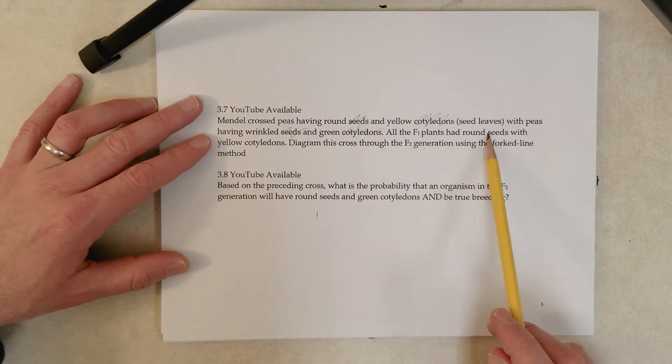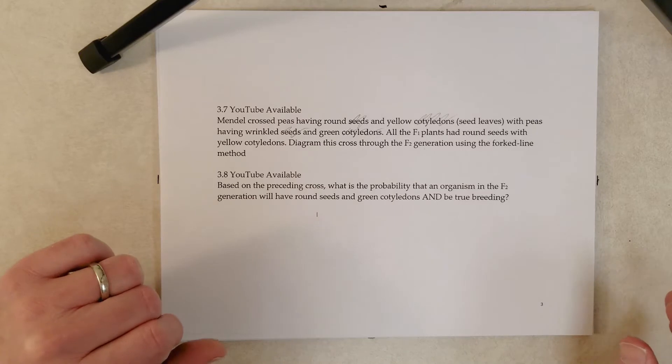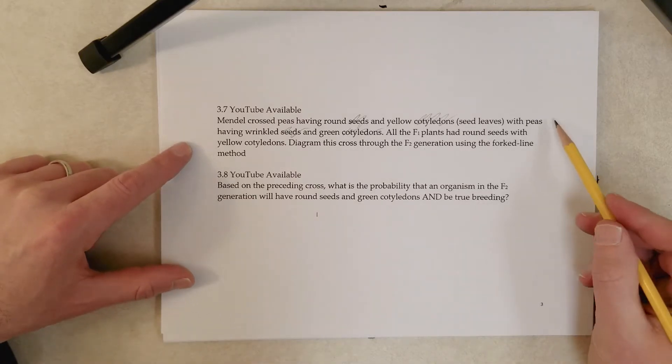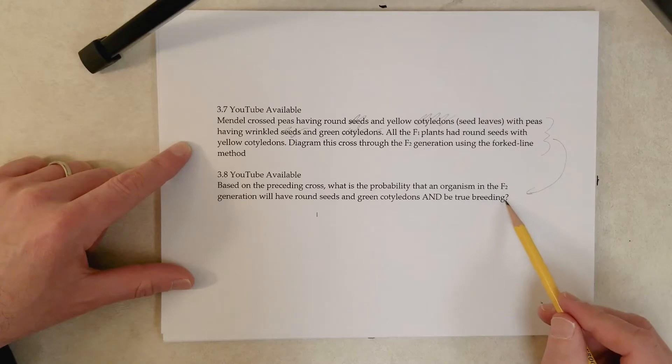All the F1 plants have round seeds with yellow cotyledons. Diagram the cross through the F2 generation using the forked line method. And the reason why I want to go through this again, we did this in a previous video too, but the reason I want to go through it again is I want you to see how you can answer this question right here.